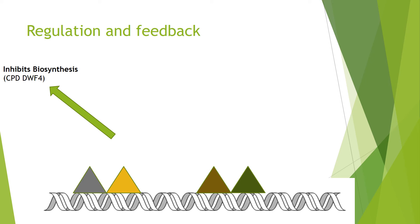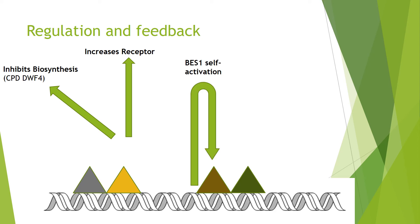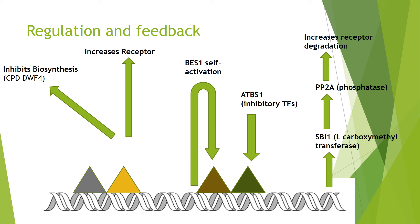Moving on to regulatory feedback, which in hormonal pathways is very important. First, there is transcriptional inhibition of CPD and DWF4, which are involved in brassinosteroid biosynthesis. Next, brassinosteroids increase the amount of receptor at the membrane, increasing sensitivity. BES1 also activates its own transcription, forming a positive feedback loop. Additionally, ATBS1 are inhibitory transcription factors with a similar structure to BES1 and BZR1 but lacking the basic region, so they sequester BES1 away from its specific genomic sites. Finally, there is transcriptional activation of SBI1, a leucine-carboxymethyl transferase, which activates a PP2A phosphatase that can increase receptor degradation by dephosphorylation.